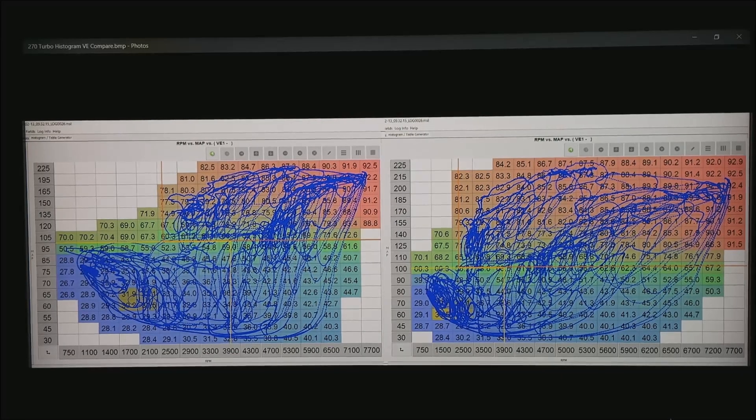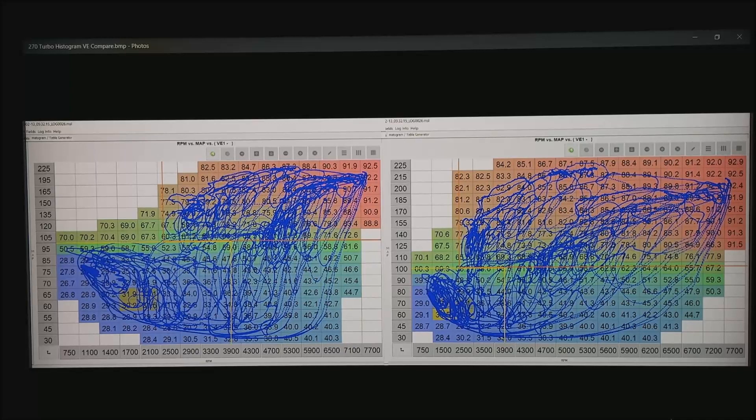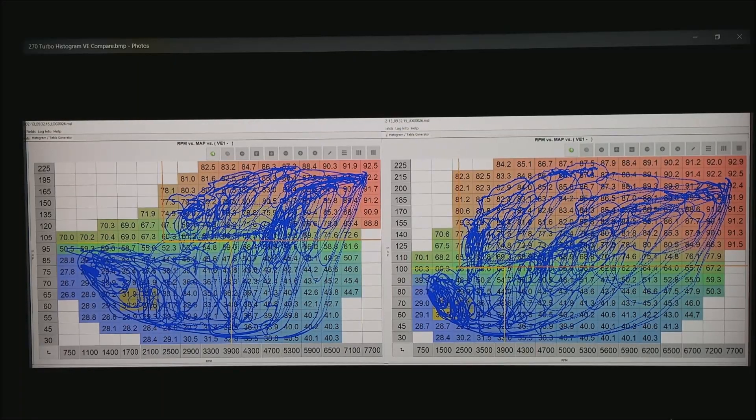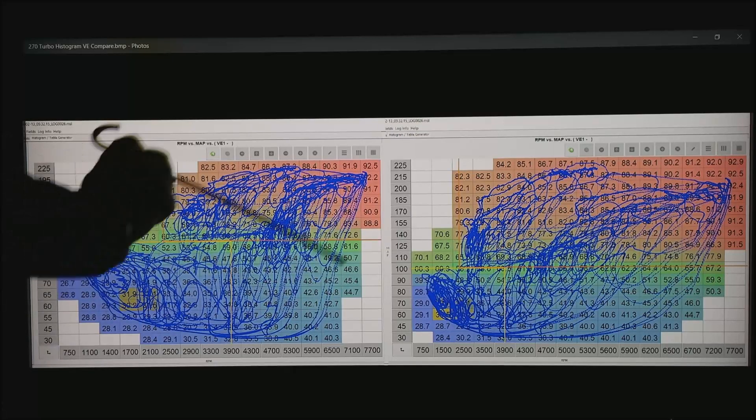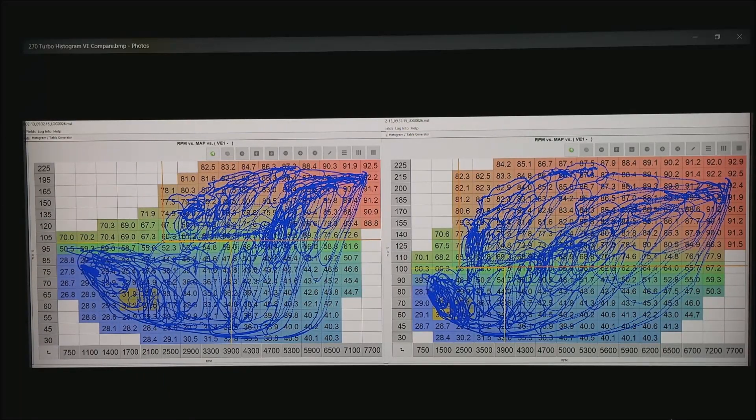So now this is that same turbo motor. What I'm showing is how you bend out or set your brake points for manifold air pressure. This is the same VE table. All I've done is changed the progression.